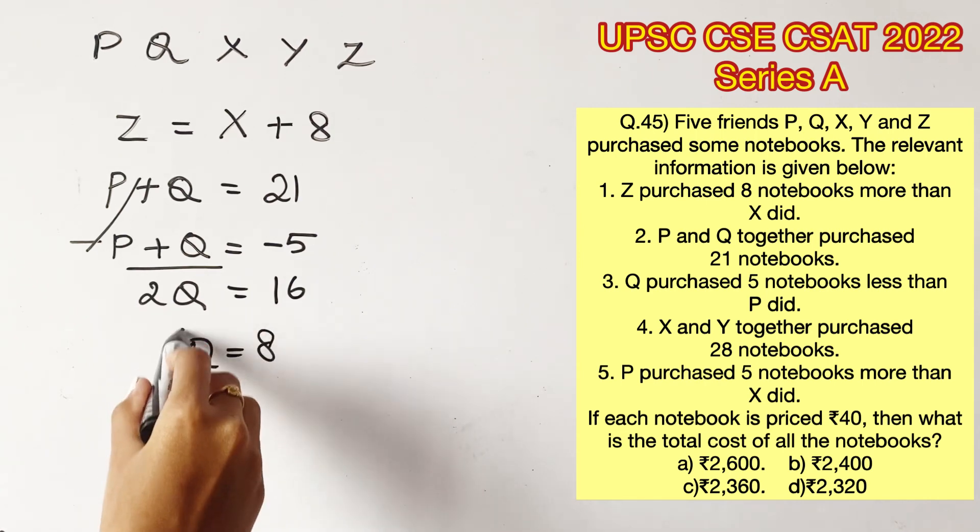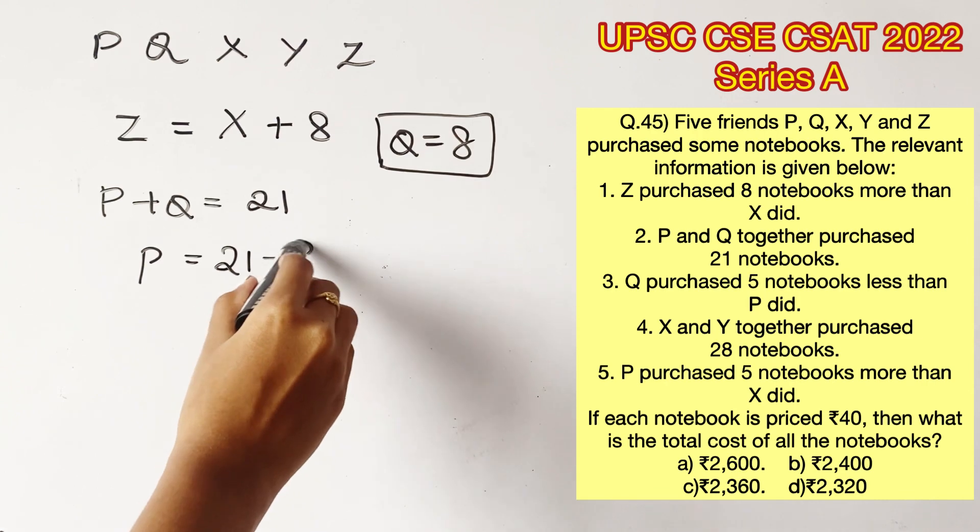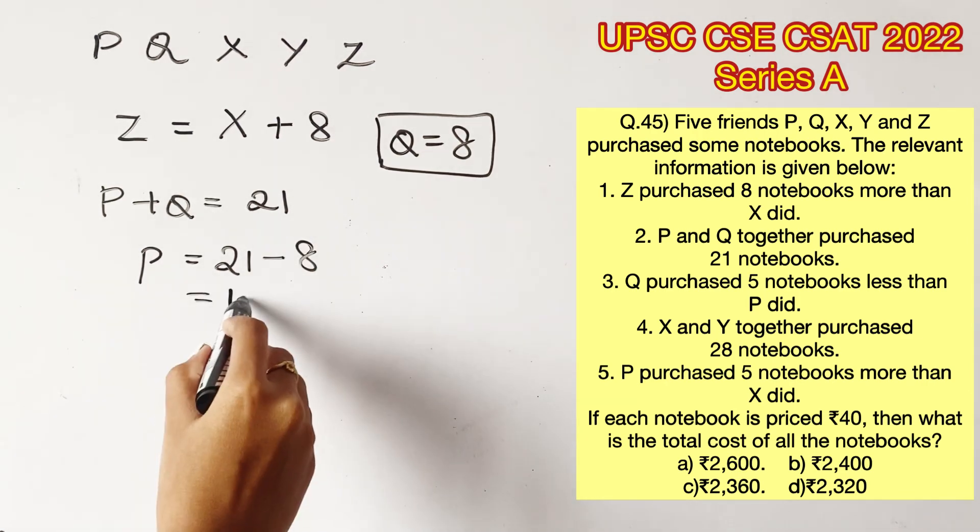Now we can substitute the value of Q in the first statement. P will become 21 minus 8, which is equal to 13.